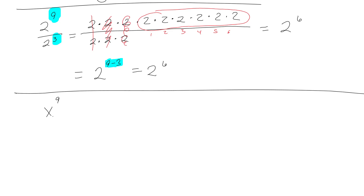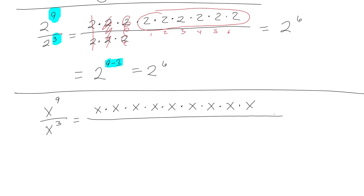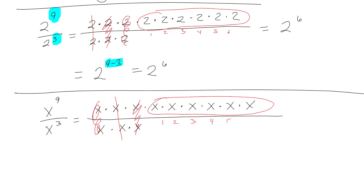Let's put x's in there. I'll put nine x's on top and three on the bottom. These x's cancel, these x's cancel, and these x's cancel — leaving six x's on top, so I get x to the sixth. Another way: x to the nine minus three equals x to the sixth.